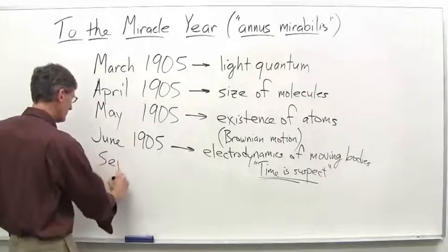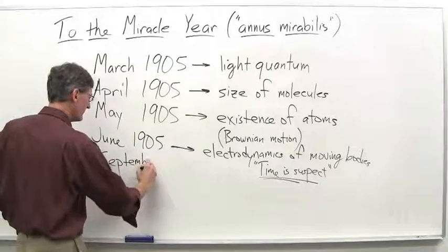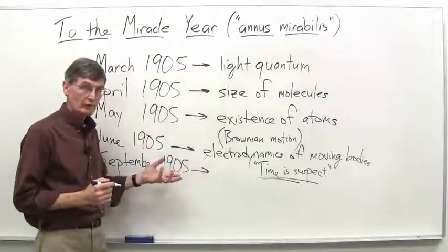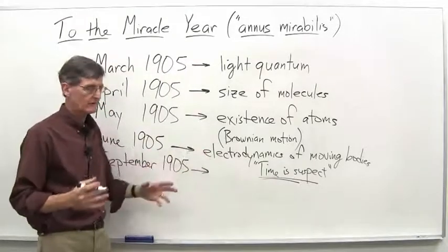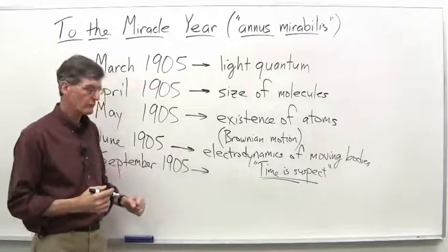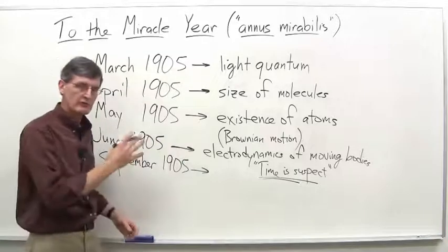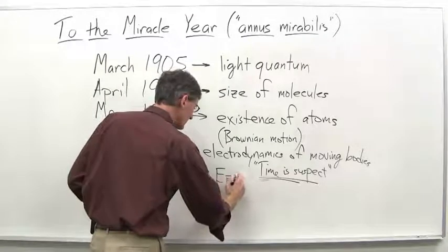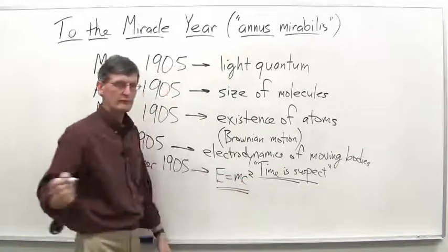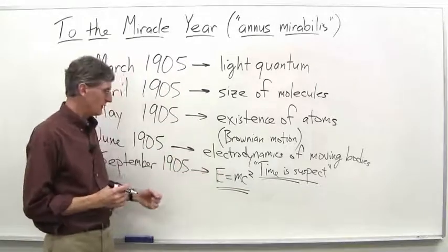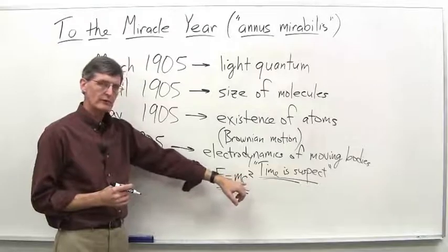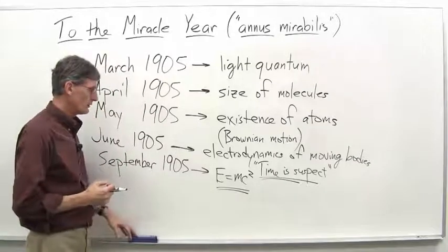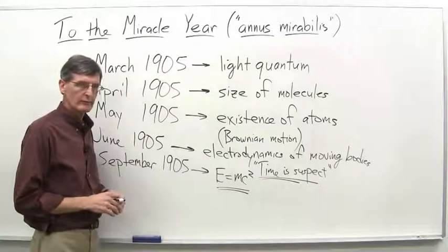Then, one more paper in September 1905. And essentially, this is an addendum, a coda to the June 1905 paper. He says, you know, I've been thinking more about that paper I wrote a few months back. And there's some interesting implications of that. And essentially, the key one is E equals mc squared. Einstein didn't quite write it like that, but that's essentially what it is. Energy equals mass times the speed of light squared. Most famous equation, certainly, in the world. And really just sort of a tacked on paper to an earlier paper here. So, definitely the miracle year.